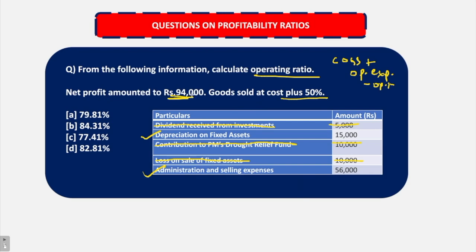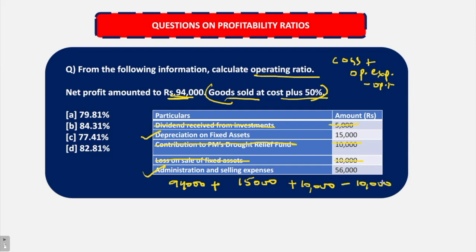Net profit is given as 94,000. When you add all kinds of operating and non-operating indirect expenses, and when you deduct indirect incomes, then you arrive at gross profit. So the gross profit would be 94,000 — which is the net profit — you add back all the expenses: 15,000 depreciation on fixed assets, plus 10,000 contribution which is an indirect expense, loss on sale of fixed asset also. And then you reduce indirect incomes — dividend receipts from investments, which are 5,000. So after adding and reducing all these things, gross profit comes out to be 1,80,000.